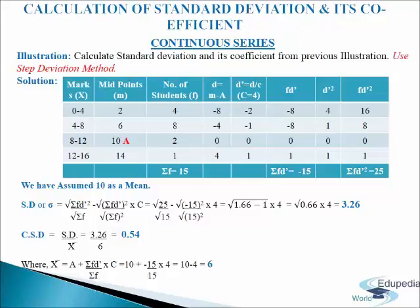Now come to the fourth column: d equals to m minus a. So 2 minus 10 gives minus 8, 6 minus 10 gives minus 4, 10 minus 10 is 0, and 14 minus 10 gives 4. Now come to the next column: d dash equals to d divided by c, where c equals to 4, the common factor. So minus 8 divided by 4 gives minus 2, minus 4 divided by 4 gives minus 1, 0 divided by 4 gives 0, and 4 divided by 4 gives 1.